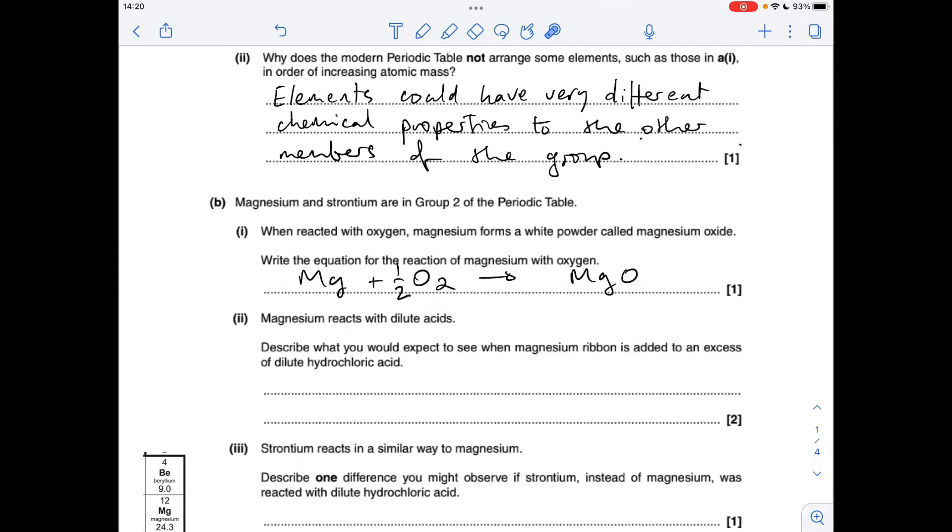Part B now, so the equation for the reaction between magnesium and oxygen you can either do it like that or just double it out if you're not keen on the fraction so it would be 2-1-2.